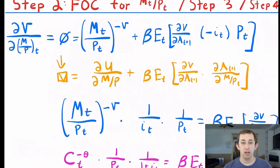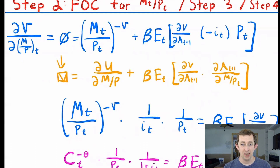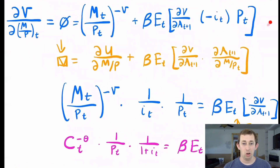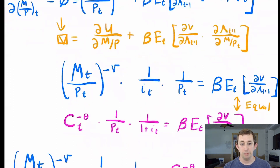Now we're going to do something very similar for real money demand. I'm taking DV/D(M/P_T), which again equals zero by the envelope theorem, still using the chain rule. It's a little trickier to see why DA_{t+1}/D(M/P_T) equals negative I_T times P_T, so I encourage you to look at the budget constraint and see if you can back out how to get there. If you still can't, comment below and I'll put that in a future video. Again, we use the fact that it equals zero to solve that equation in terms of beta times E_T [DV/DA_{t+1}].